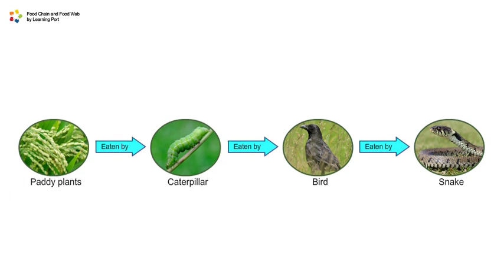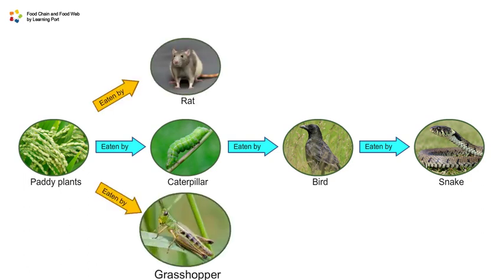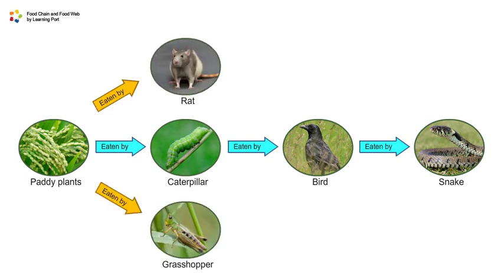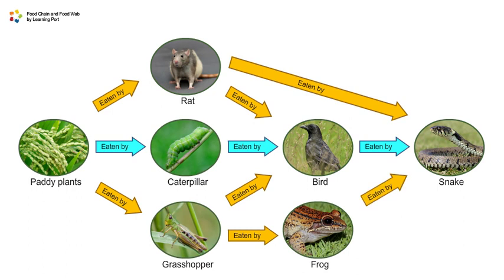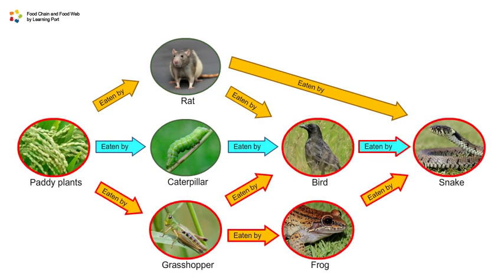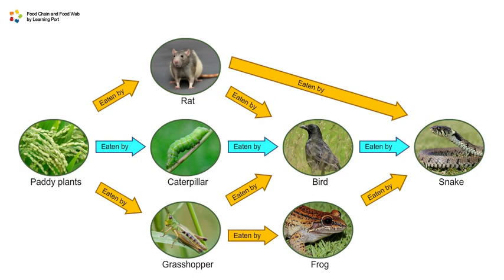Patty plants can be eaten by other animals, such as rats and grasshoppers. The same type of animals can be eaten by different animals. As you can see, there are many food chains interconnected in this ecosystem, and they form a food web.